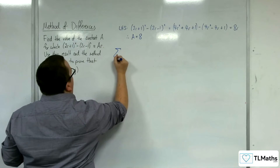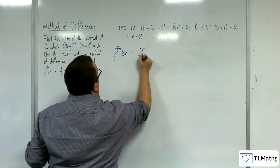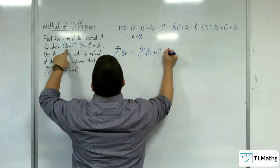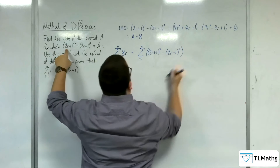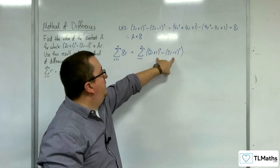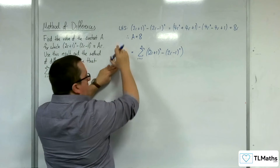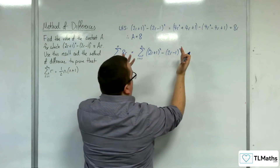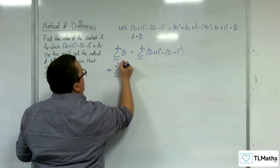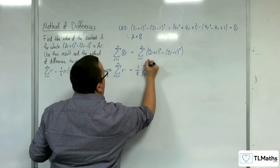We can look at the sum from r=1 to n of 8r, and we know that this is going to be the sum from r=1 to n of (2r+1)² take away (2r-1)². This is what we've been able to show from that first part, that 8r is equivalent to this. So the sum from r=1 to n of r is going to be one eighth of the sum from r=1 to n of this.